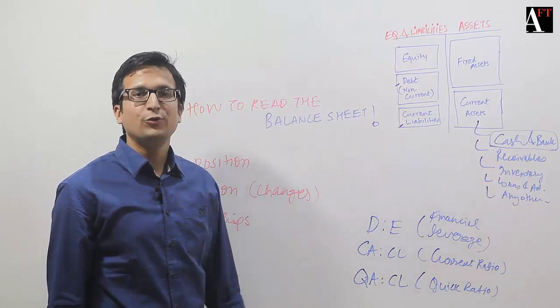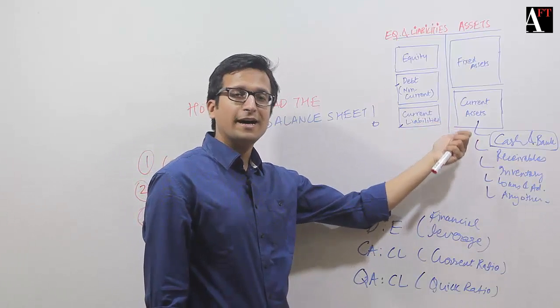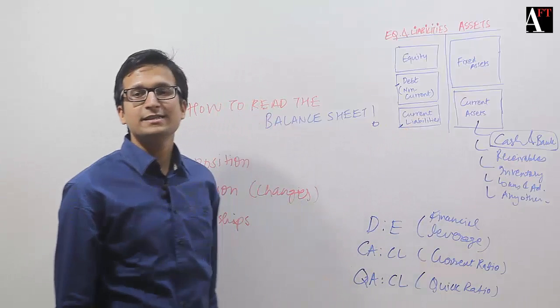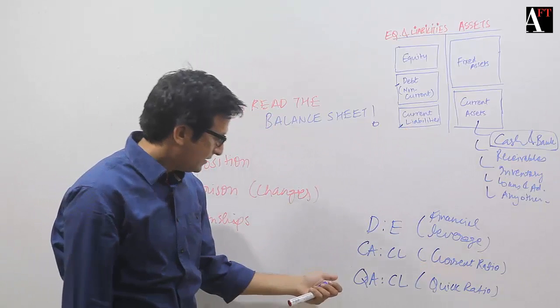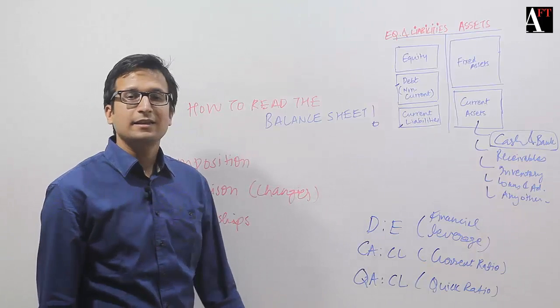To simply put it, do I have sufficient cover in the form of assets available to me in the next one year to pay all of these liabilities? That is the simple explanation for the quick ratio. Like this, there could be many more relationships which could be found out.